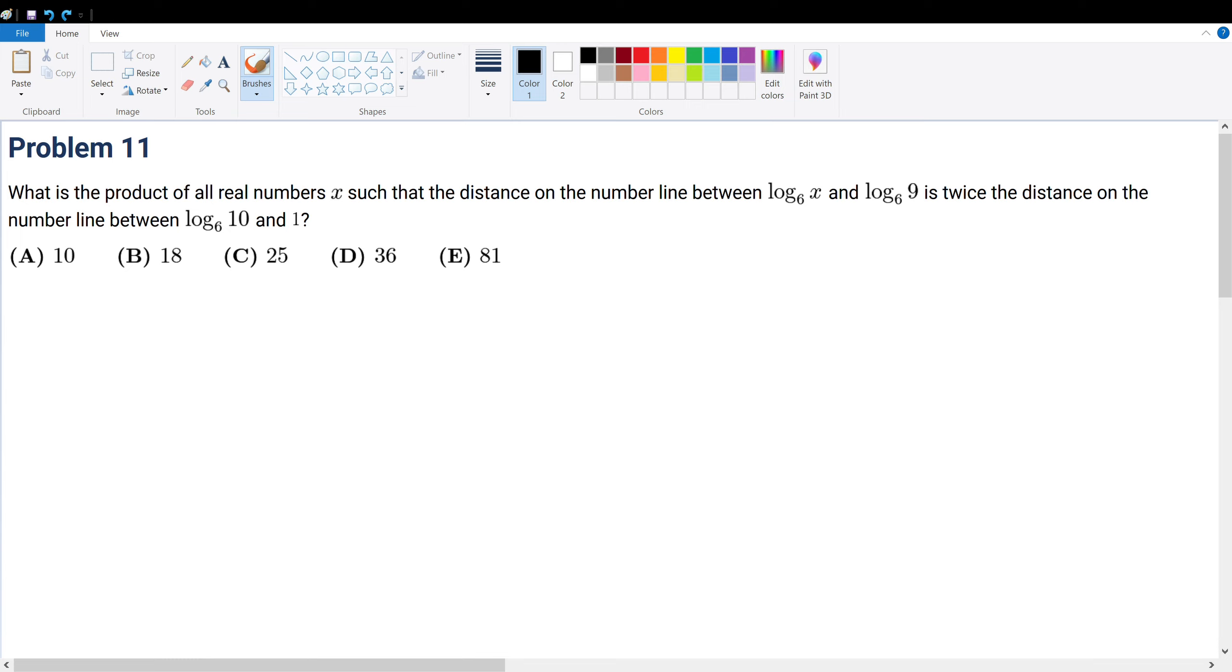Problem 11: What is the product of all real numbers x such that the distance on the number line between log base 6 of x and log base 6 of 9 is twice the distance on the number line between log base 6 of 10 and 1?